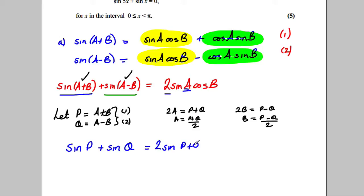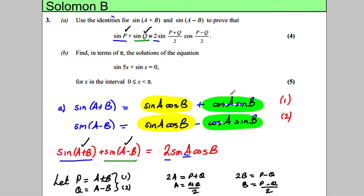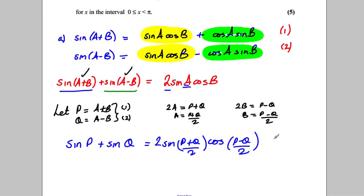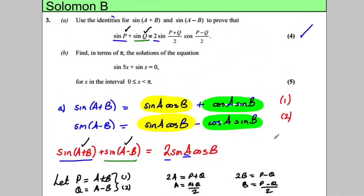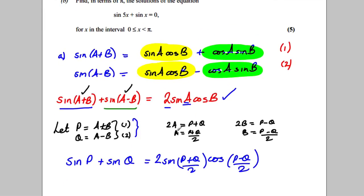So A is equal to (P+Q)/2 and B is equal to (P−Q)/2, and that's exactly what we're asked to show. That's a standard derivation you should learn: write out sine(A+B) and sine(A−B), add the two, get the result, define P as A+B and Q as A−B, solve simultaneously to make A and B the subject, then substitute everything back in to get the identity.